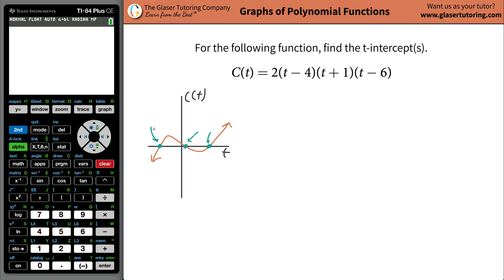All three of those points have an unknown x value but a known C(t) value or a known y value. They all have a known y value.